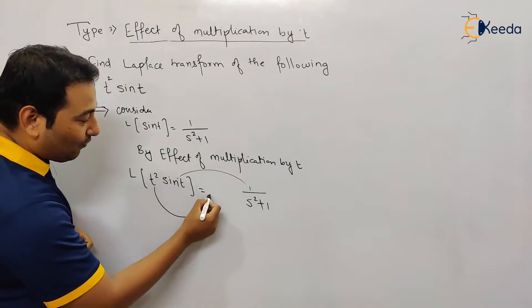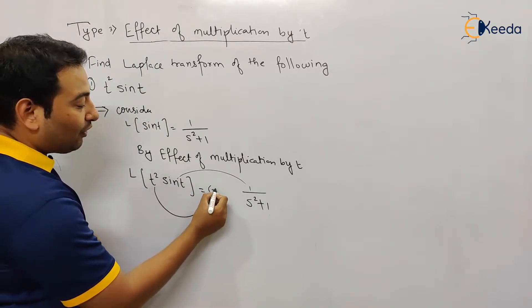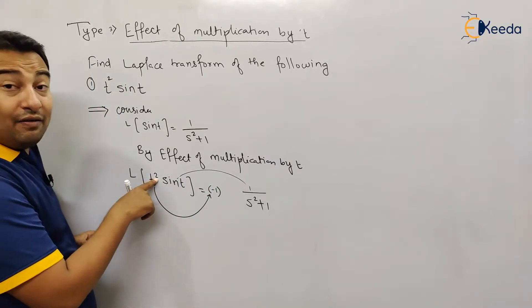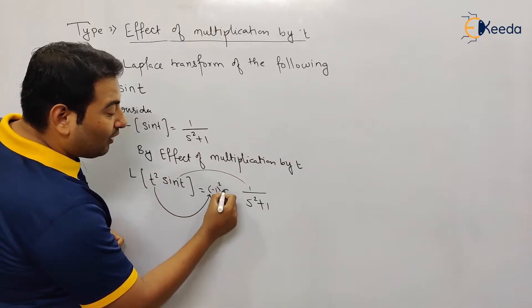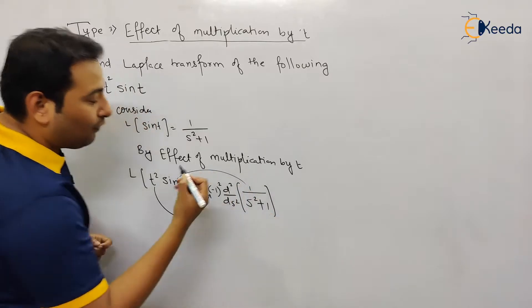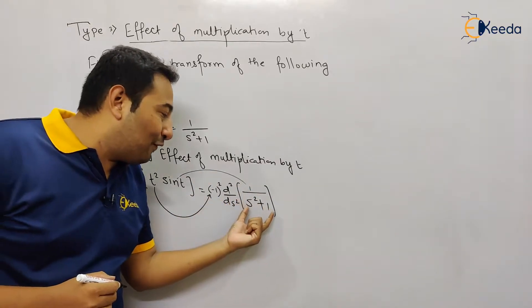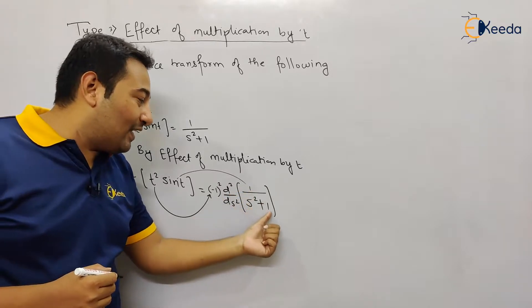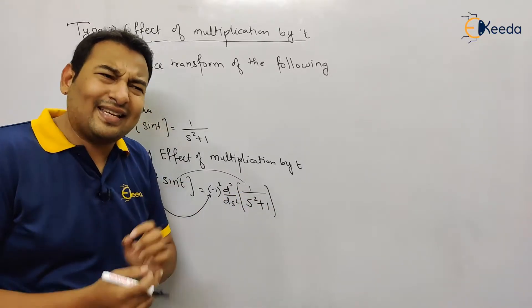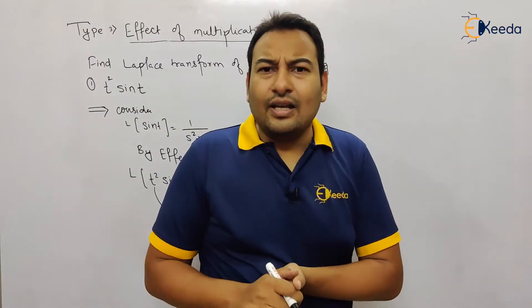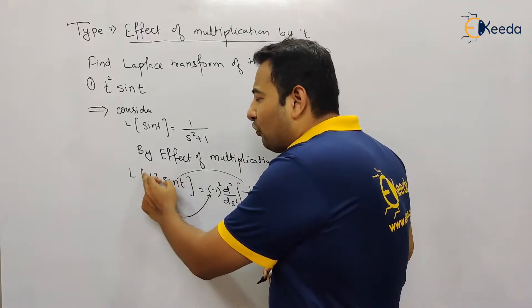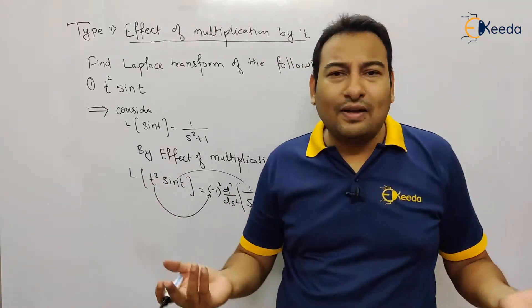Since sin(t) has Laplace 1/(s²+1), due to this t squared the effect is: we write minus 1 raised to n, but here in place of n we have 2, so minus 1 squared times d²/ds² of F(s). That means we need to differentiate 1/(s²+1) with respect to s twice to get the result.